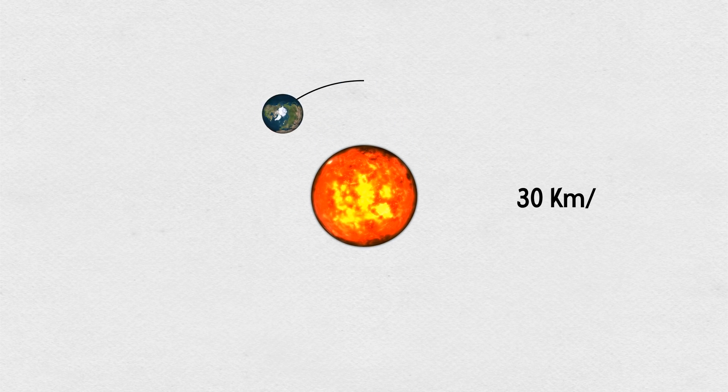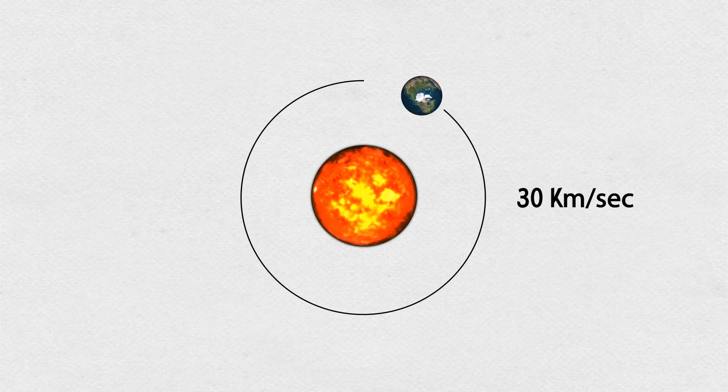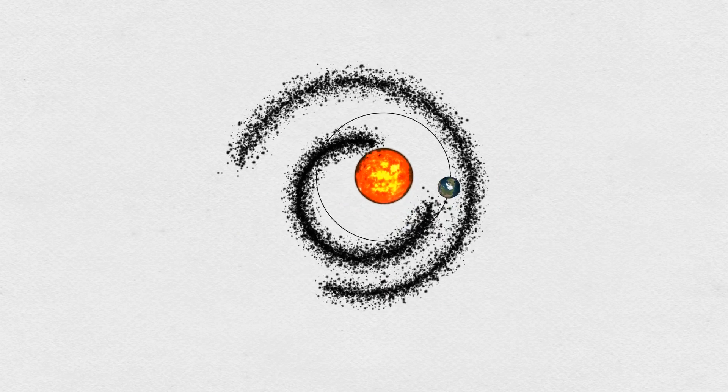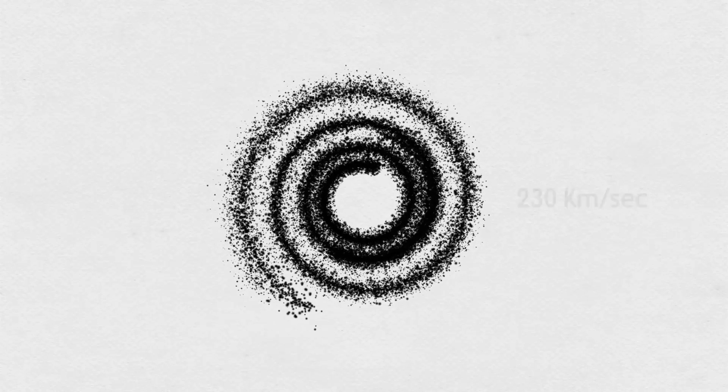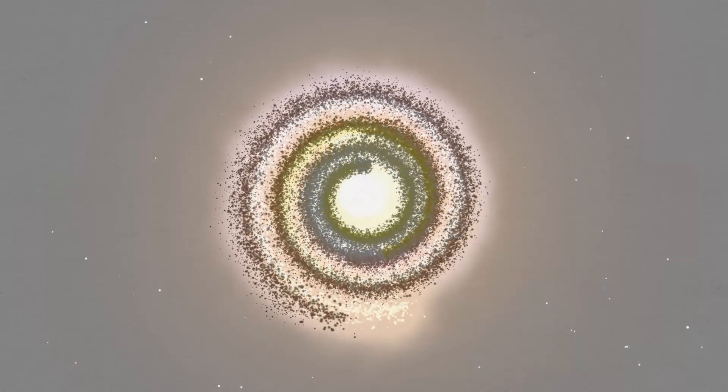Next, the Earth moves at about 30 kilometers per second in its orbit around the Sun, and the whole solar system is traveling at an average speed of 230 kilometers per second around the center of the galaxy.